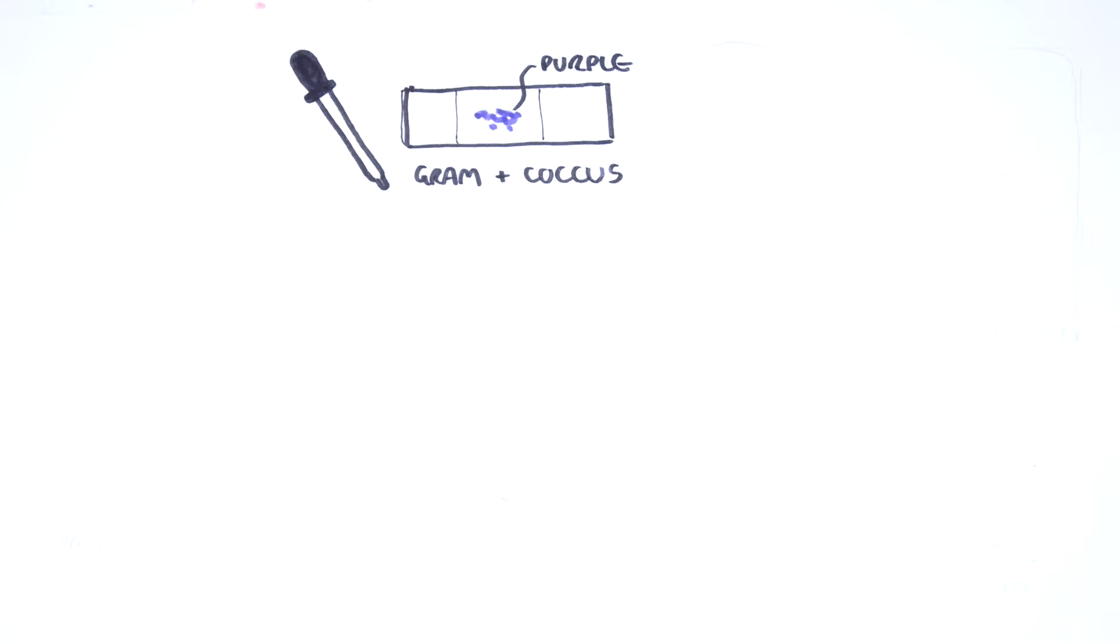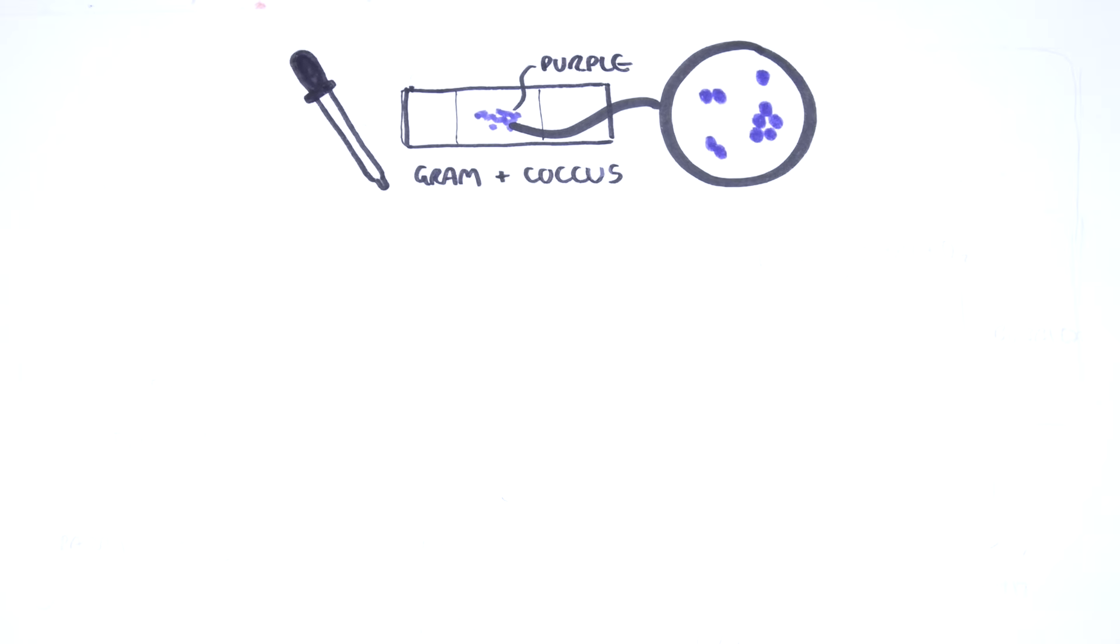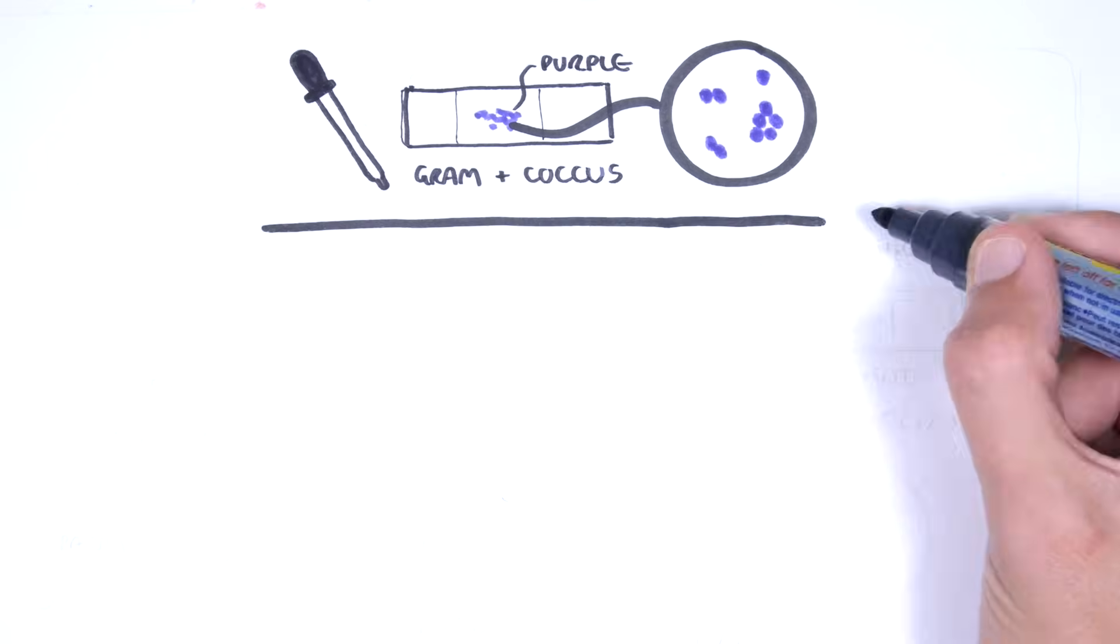There are two main species of gram-positive cocci that cause human infections. These are streptococci and staphylococci.